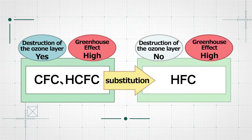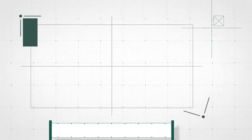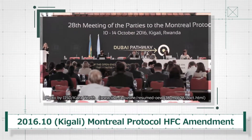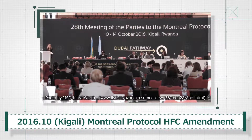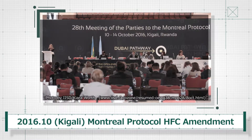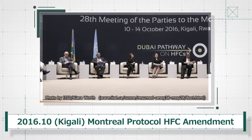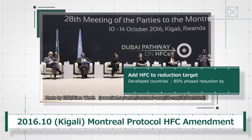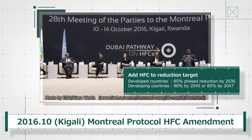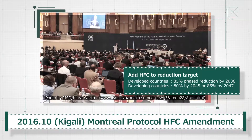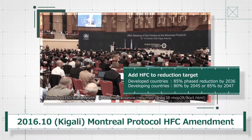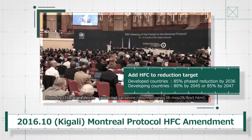From the viewpoint of measures against global warming, it became necessary to suppress HFC emissions into the atmosphere. Therefore, adding HFC to the reduction targets of the Montreal Protocol was discussed internationally, and an agreement was reached in Kigali, Rwanda in October 2016. Developed countries are required to reduce HFC by 85% by 2036, and developing countries by 80% by 2045 or 85% by 2047.